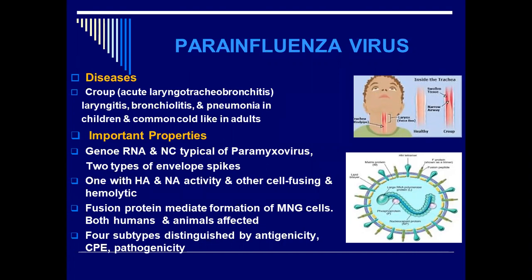Croup refers to infection of the upper respiratory airways, which obstructs breathing and causes a characteristic barking cough. The cough and other symptoms result from swelling of the voice box. Croup is the upper respiratory tract infection characteristically represented by a barking cough, and this is characteristic of the parainfluenza viruses.